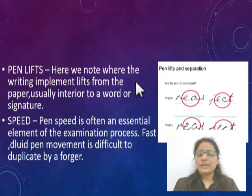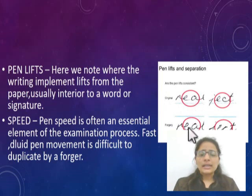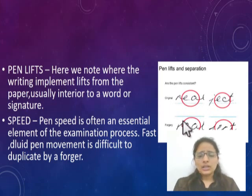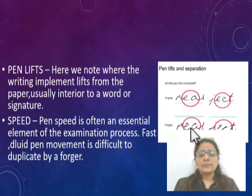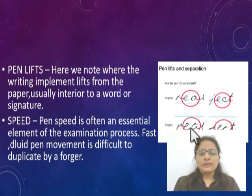Pen lifts refers to the number of times a person lifts the pen while writing a word or letter. For example, in one sample the pen is lifted after 'E' before writing 'A,' whereas in another, 'E' and 'A' are written continuously without lifting. This is the original versus a copied or forced one. Pen lifts help determine whether a person wrote the original or whether a forced writing was done — this is particularly helpful in signatures when someone tries to copy another person's signature, helping determine whether the signature is forced or genuine.